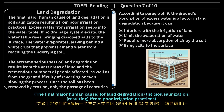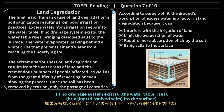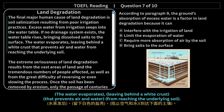The final major human cause of land degradation is soil salinization resulting from poor irrigation practices. Excess water from irrigation seeps into the water table. If no drainage system exists, the water table rises, bringing dissolved salts to the surface. The water evaporates, leaving behind a white crust that prevents air and water from reaching the underlying soil.